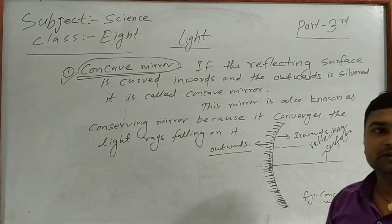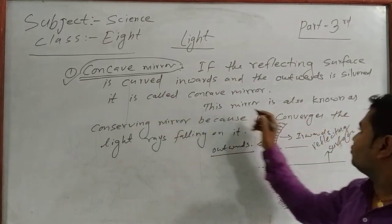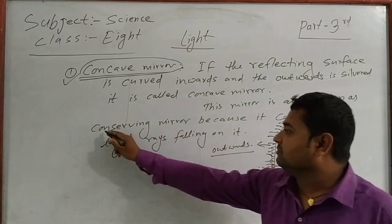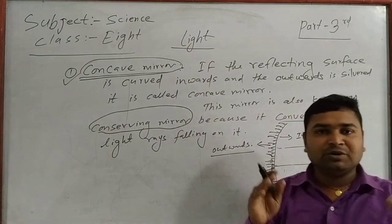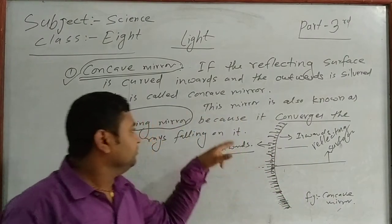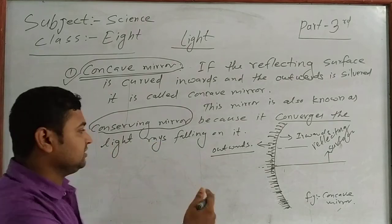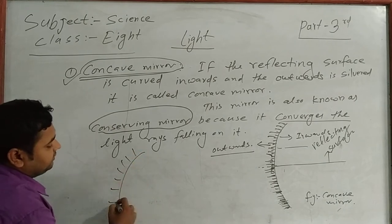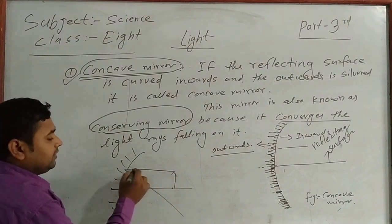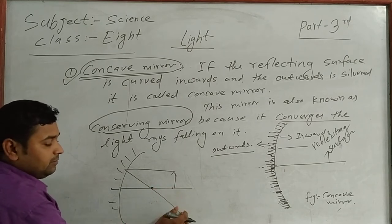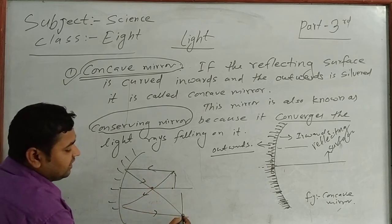This concave mirror is also known as the converging mirror, because it converges all the beams of light at a point. When the object is kept, all the rays of light converge at a point — passing through the focus. The two rays of light converge and meet at a point. So this concave mirror is also known as the converging mirror.